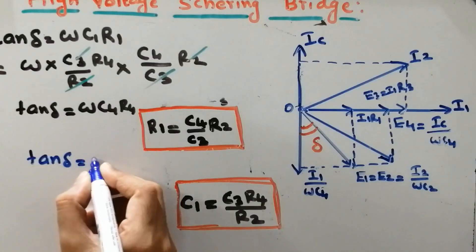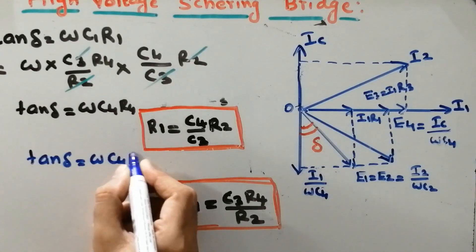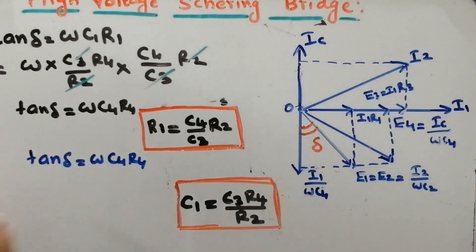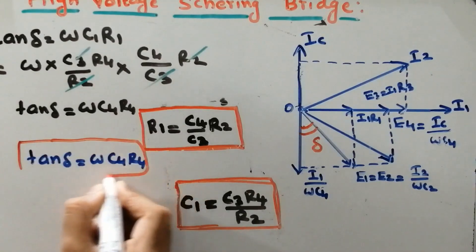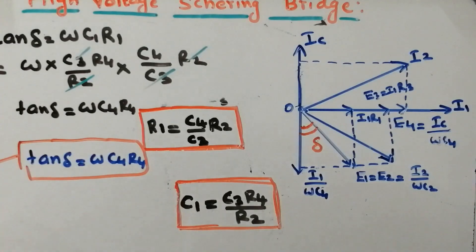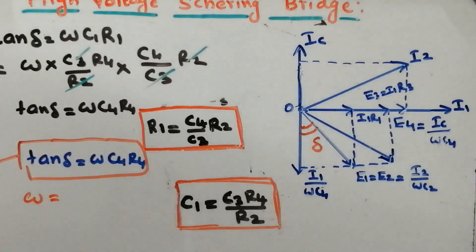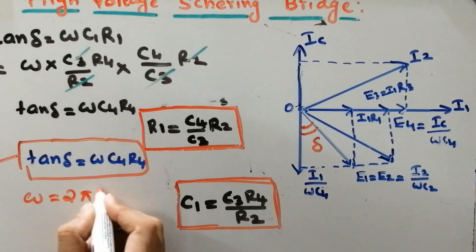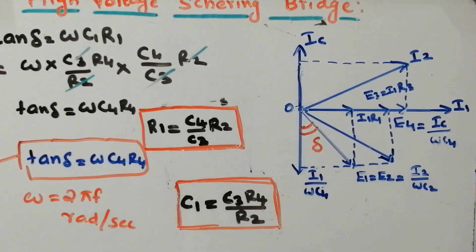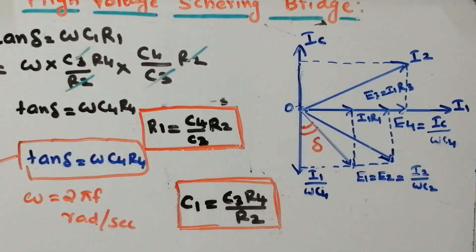Tan delta equals ω times C4 times R4. You can keep this equation in a separate block, as it will be helpful for solving numerical examples. Here omega is the angular frequency — if you know the supply frequency, you can easily calculate angular frequency as 2πf, normally expressed in radians per second. This is the way to calculate dielectric loss: tan delta equals ω times C4 times R4.